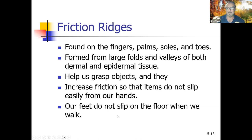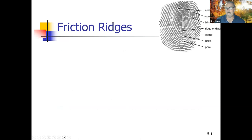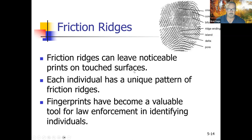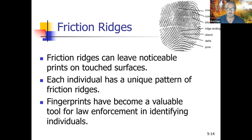Friction ridges increase friction so items don't slip from our hands — without fingerprints, a glass would just slip out. They help us grasp objects just as our ancestors needed to. What's left behind on surfaces is sebum (oil from sebaceous glands); fingerprint dust sticks to that oil and can identify the person. Each individual has a unique pattern of friction ridges. Fingerprints have been a valuable law enforcement tool, though DNA is more important now. Wearing gloves prevents fingerprints from being transferred.